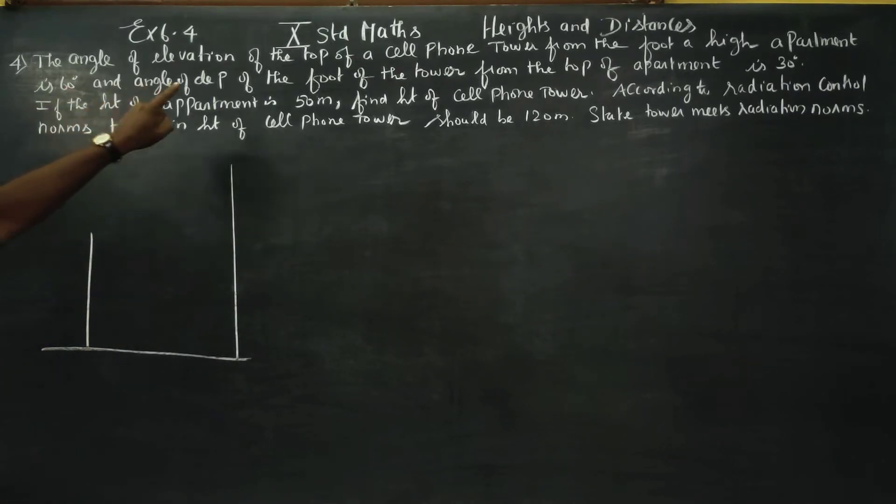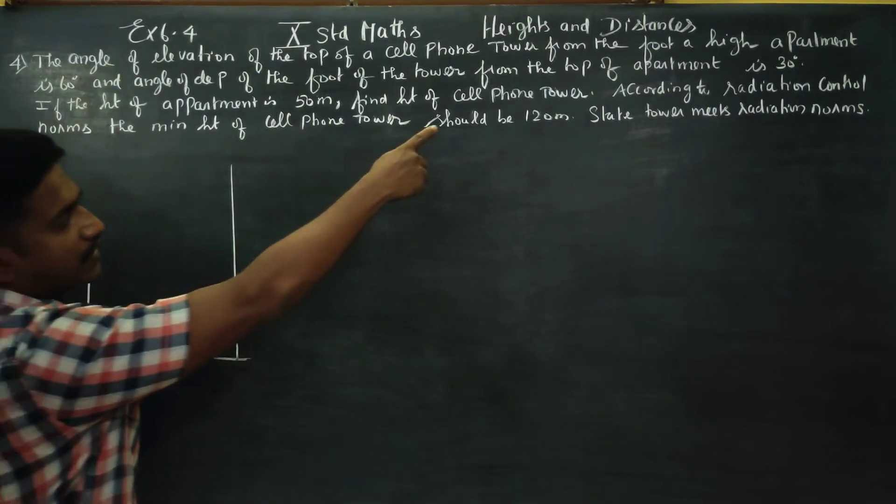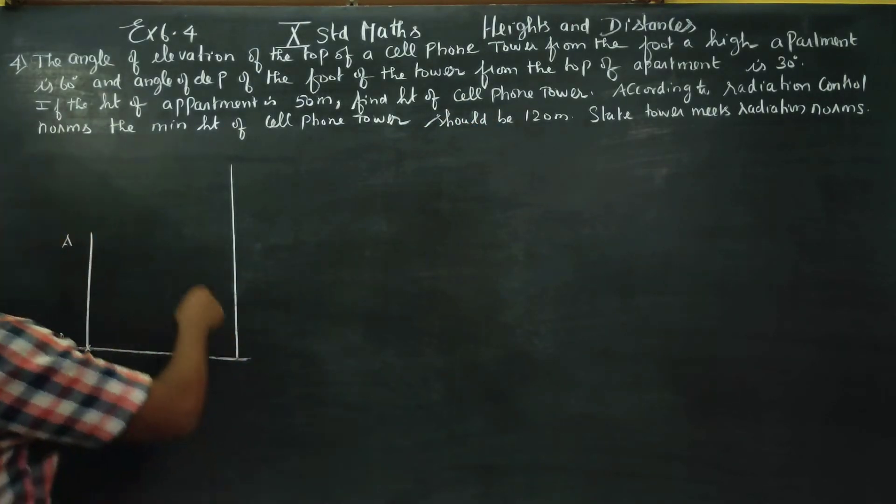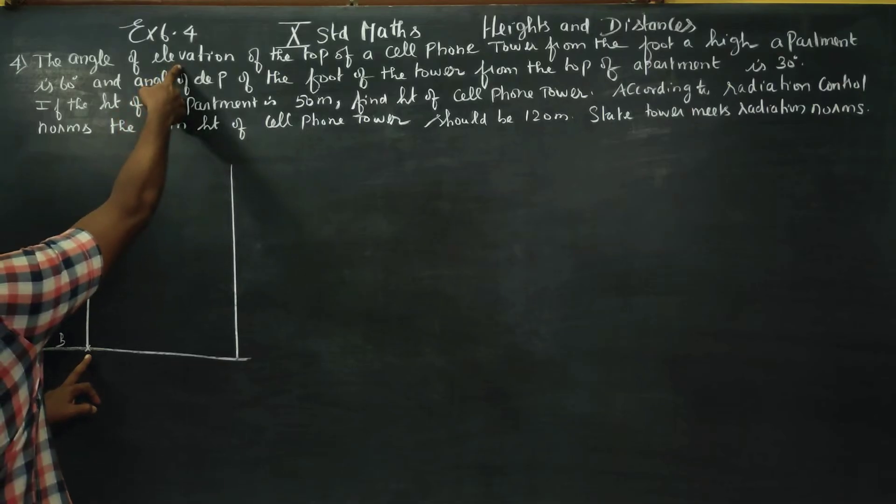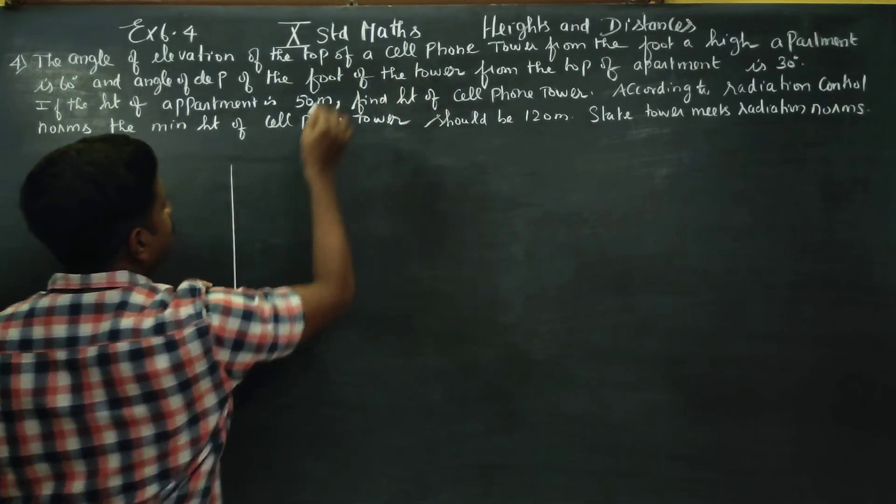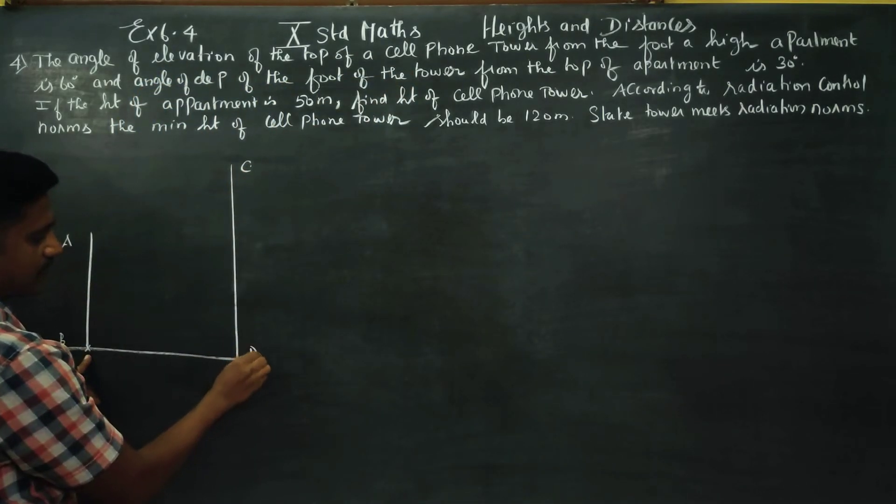The angle of elevation of the top of the cell phone tower from the foot of the high apartment. AB is the apartment. This is the foot. Foot is 60 degree angle of elevation. CD is the cell phone tower.